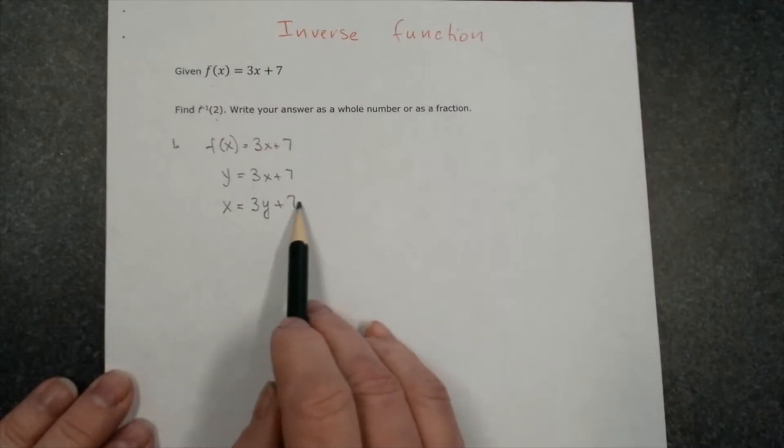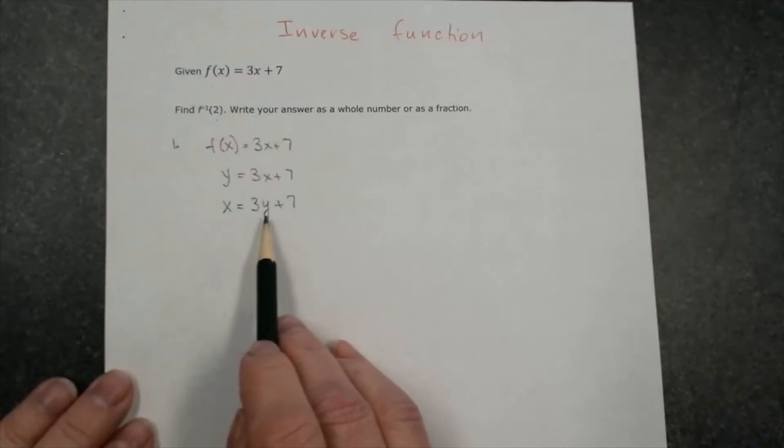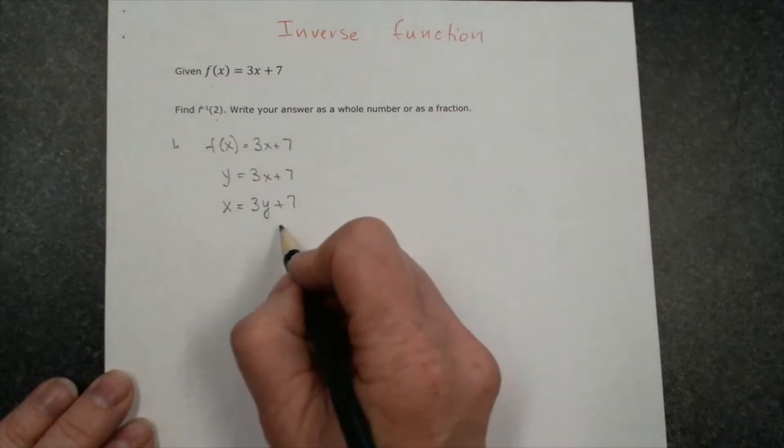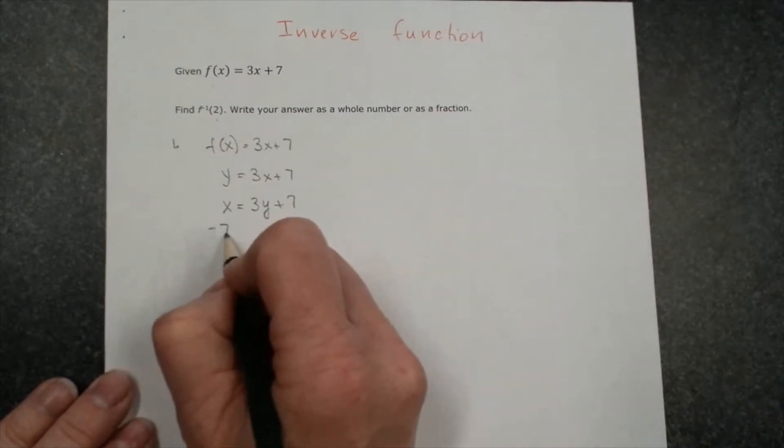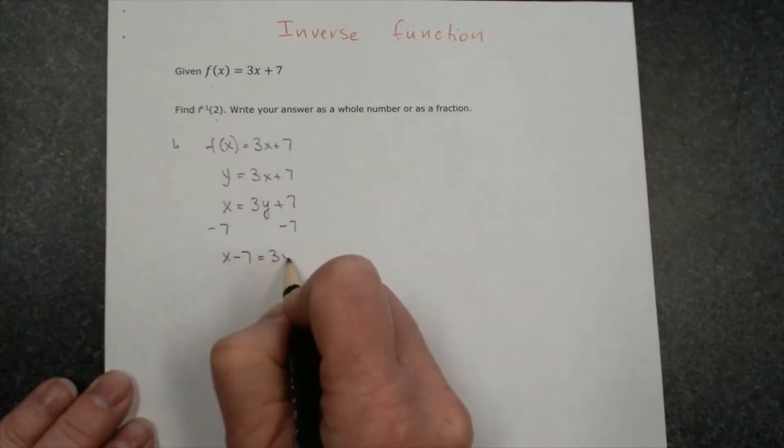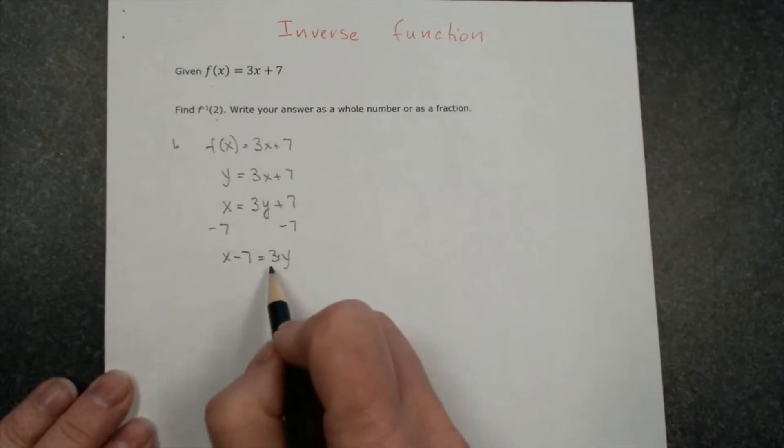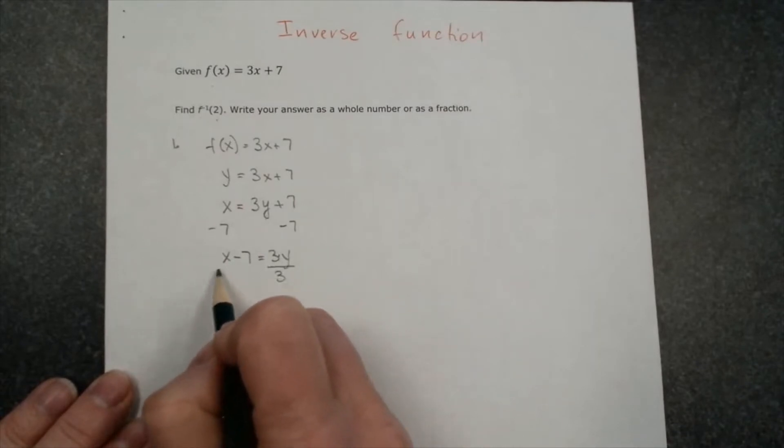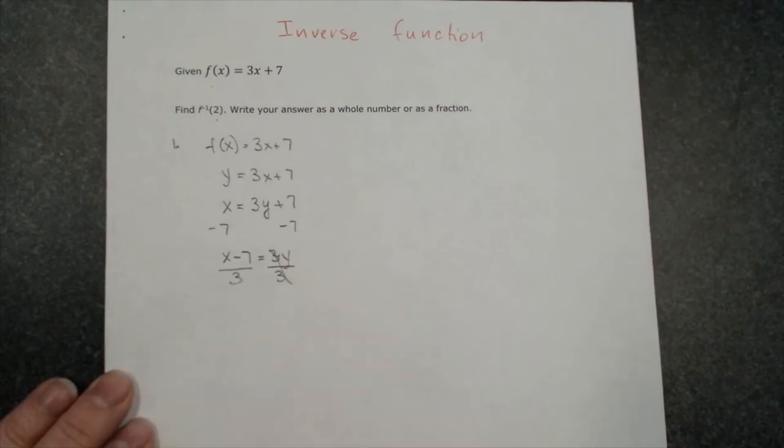Next step, we have to solve this equation for y. It means we have to have y by itself on one side. We will subtract 7 from both sides. x minus 7 is equal to 3y. It's multiplication between 3 and y, so we have to divide by 3. 3 and 3 will cancel out. Now we have x minus 7 over 3 is equal to y.